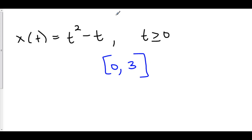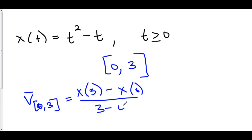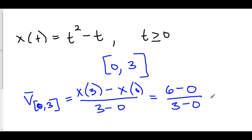If you want to find the average velocity from zero to three, keep in mind that velocity is the rate of change of position, and to find the average rate of change you use a slope. So our average velocity on the interval from zero to three equals the slope: x of three minus x of zero over three minus zero. x of three is three squared minus three, which is six, minus x of zero, which is zero, over three minus zero. So our average velocity is two — using the formula that average rate of change is the slope between two points.